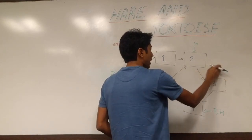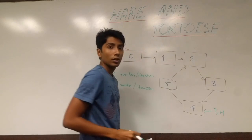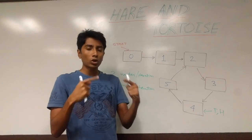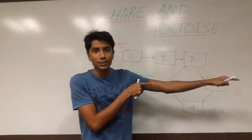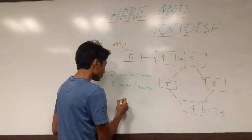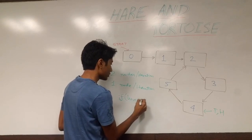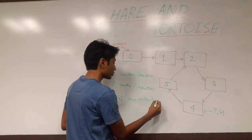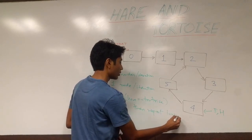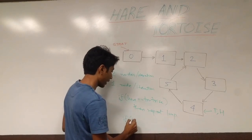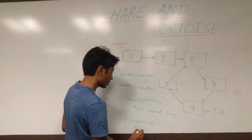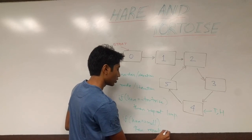So if this condition ever happens — if the tortoise and the hare are pointing to the same node — that means there is a loop. Logically it would have been impossible for the tortoise and the hare to be pointing at the same node if they are moving at different speeds; the hare should have been far ahead. So if they are pointing at the same node, then there is a loop. If the hare is pointing at where the tortoise is pointing, you report a loop. Otherwise, if the hare ever reaches the end of the list, you report no loop.